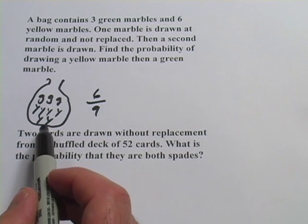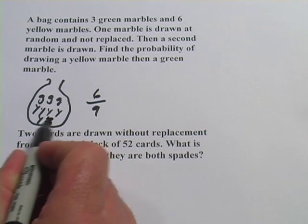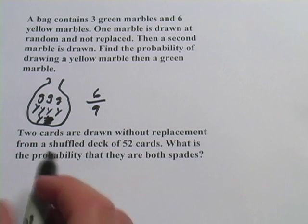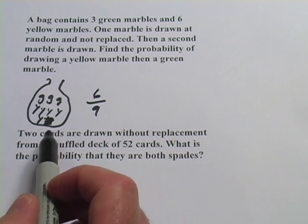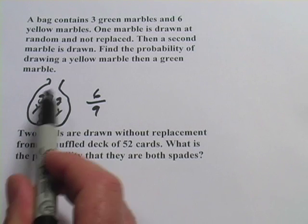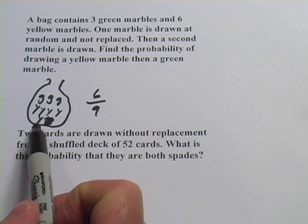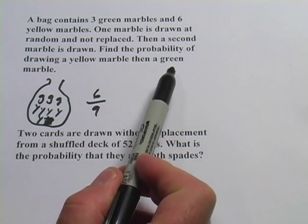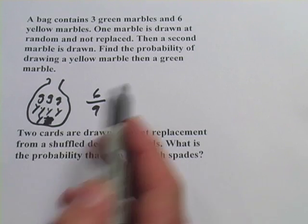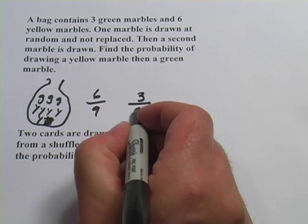When you pull the second marble out, you've got to stop and think because you've just pulled out a marble. So I'm going to erase one of these yellow ones. You've just pulled out a marble, so you only have 8 left. So for our second probability, the probability of the second event, which is the probability that it would be a green marble, you've got 3 green marbles left out of a total of 8, not 9.